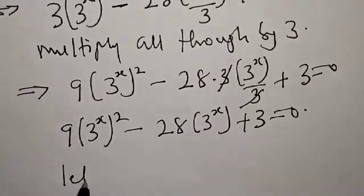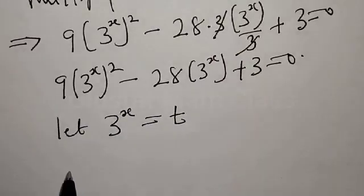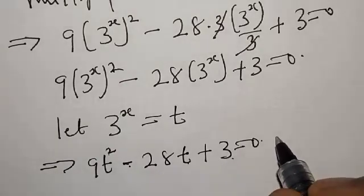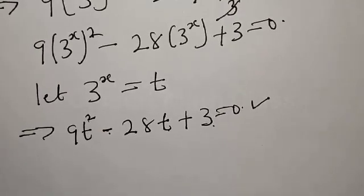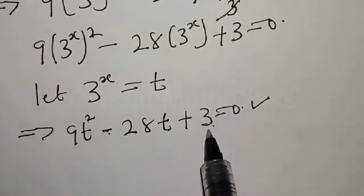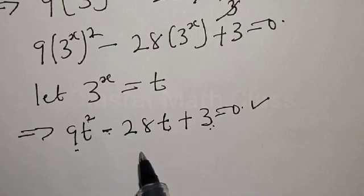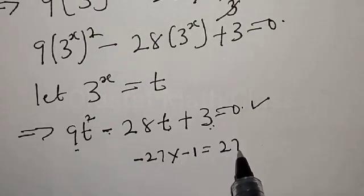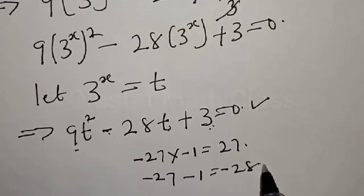Now we let 3 raised to power x equal to T. This implies that we have 9T squared minus 28T plus 3 equals 0. This is a quadratic equation. Let's solve this by using the factorization method. Our constant value is 9 times 3, which is 27. We need to find two numbers whose product is 27 and whose sum is minus 28. Minus 27 times minus 1 gives 27, and minus 27 plus minus 1 gives minus 28. This satisfies our conditions.